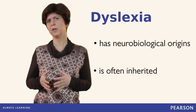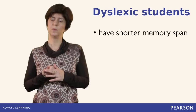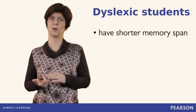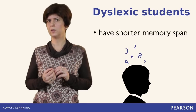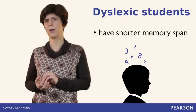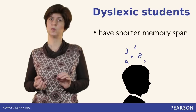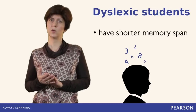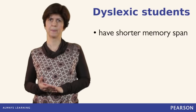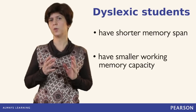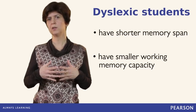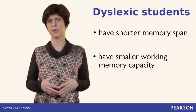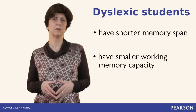Dyslexic students process verbal information differently from those who do not have dyslexia. First of all, they have shorter memory spans when it comes to processing language input. Have you tried to remember a long telephone number? In order not to forget the number, you have to keep the digits in your working memory and keep rehearsing them before you write them down. The number of units you can store is your working memory capacity. For dyslexic students, this store can only hold fewer numbers. This has wide-ranging effects on learning in general, because students can remember fewer pieces of information at a time, whether it be instructions for tasks or new words in a language.